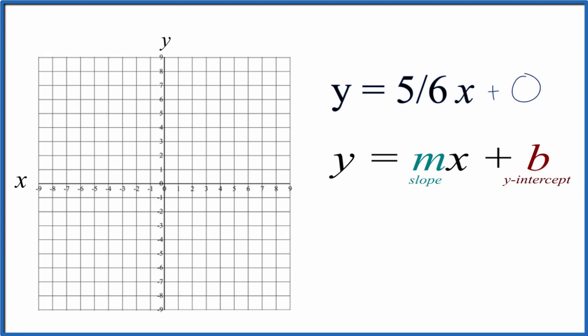So now we have our y-intercept. We go over to the y-axis here, we go to zero, and that's where the line for y equals 5/6 x is going to cross our y-axis.